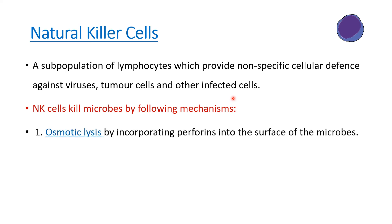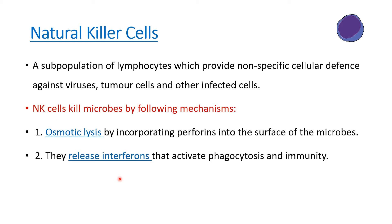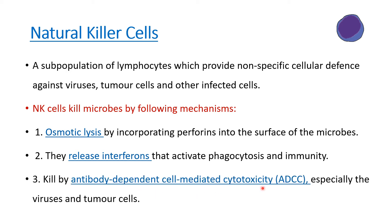Natural killer cells kill microbes by three mechanisms. First is osmotic lysis: natural killer cells make perforins — small holes — in the pathogen so that water or fluid enters and causes lysis of that microbe. Second, they release interferons which activate other phagocytes and immune mechanisms to kill the microbe. Third is antibody-dependent cell-mediated cytotoxicity (ADCC): if a virus-infected cell is surrounded by antibodies, those act as a stimulus for natural killer cells to kill that cell.